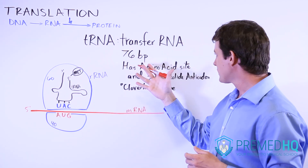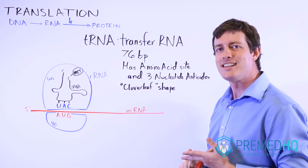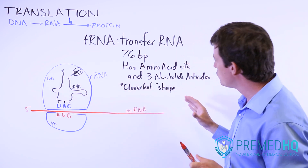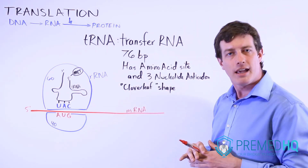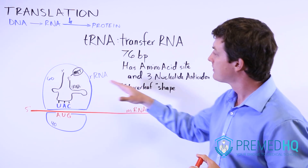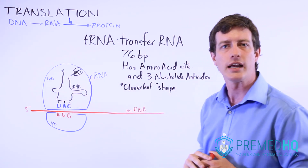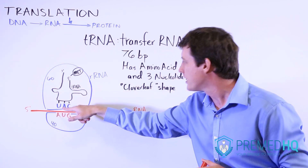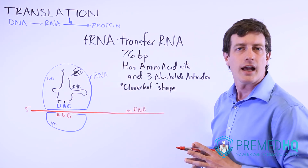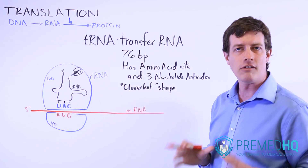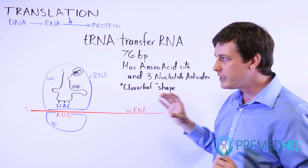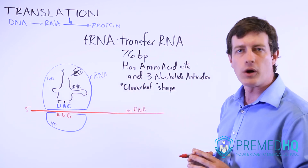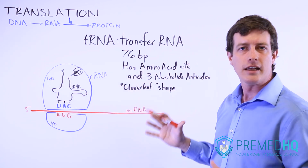So to summarize: tRNA is 76 base pairs, has the amino acid site and the anticodon. The third thing to know is that it has a cloverleaf shape. This is not usually the most important thing, but it can be useful because some processes take advantage of the shape of the tRNA. You should be aware that it has this shape with a few loops, with the anticodon and the amino acid site. We'll then get into the discussion of ribosomes, how they're formed, and how you begin the process of translating an mRNA sequence into an amino acid and ultimately into a polypeptide.